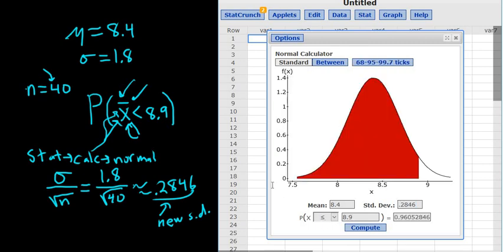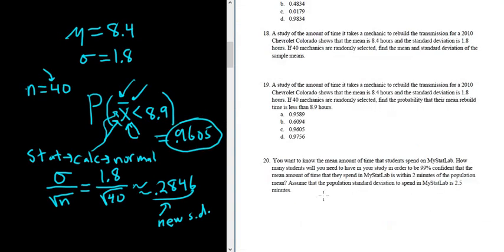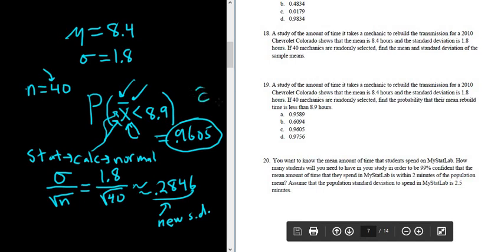I'm going to hit Compute, 0.9605. So this is equal to 0.9605, and that should be the answer. Let's check to see if it's one of the choices. And it is. So the answer is C. That's it. Thank you.